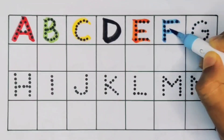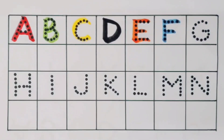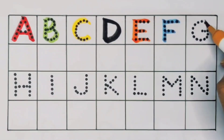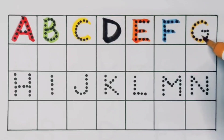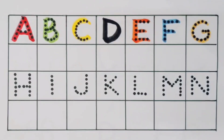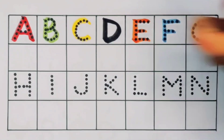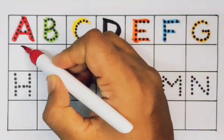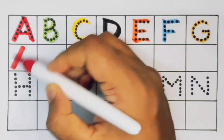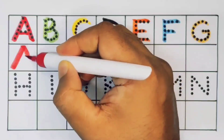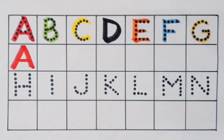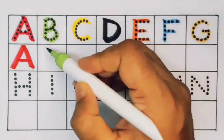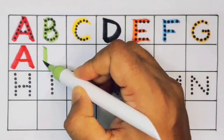Next, E, E for eagle. Next kids, F, F for flower. Next kids, G, G for guitar. Repeat again: A, A for aeroplane. Next kids, B, B for bat.